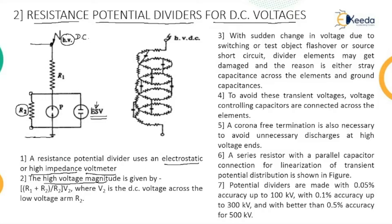This voltage is nothing but the voltage across resistance R2, and it is measured by the voltmeter. Whenever we need to measure a high DC voltage, it can be called V. This V is the high DC voltage to be measured, and it can be measured using the voltage divider rule — which is why this method is called a resistance potential divider.